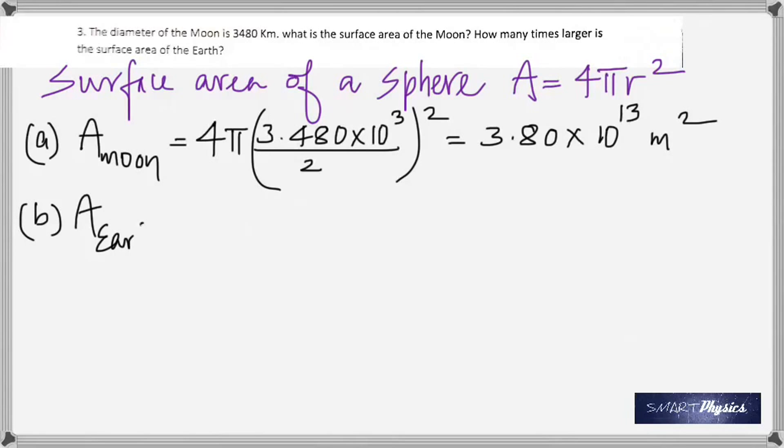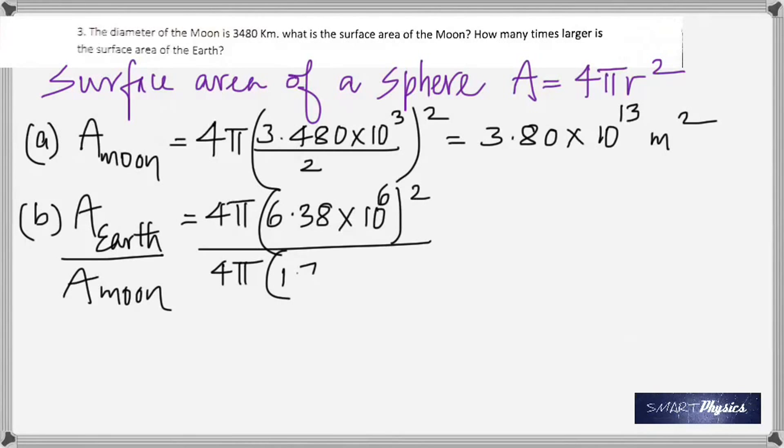Which gives 3.80 times 10 to the 13 meter squared. In the B part, to find the surface area of the Earth, use the radius of the Earth, which is 6.38 times 10 to the 6. So, since we're looking for a ratio, divide the surface area of the Earth by the surface area of the moon. The 4 π's cancel out, and it gives us 13.4. So, the surface area of the Earth is 13.4 times greater than the surface area of the moon.